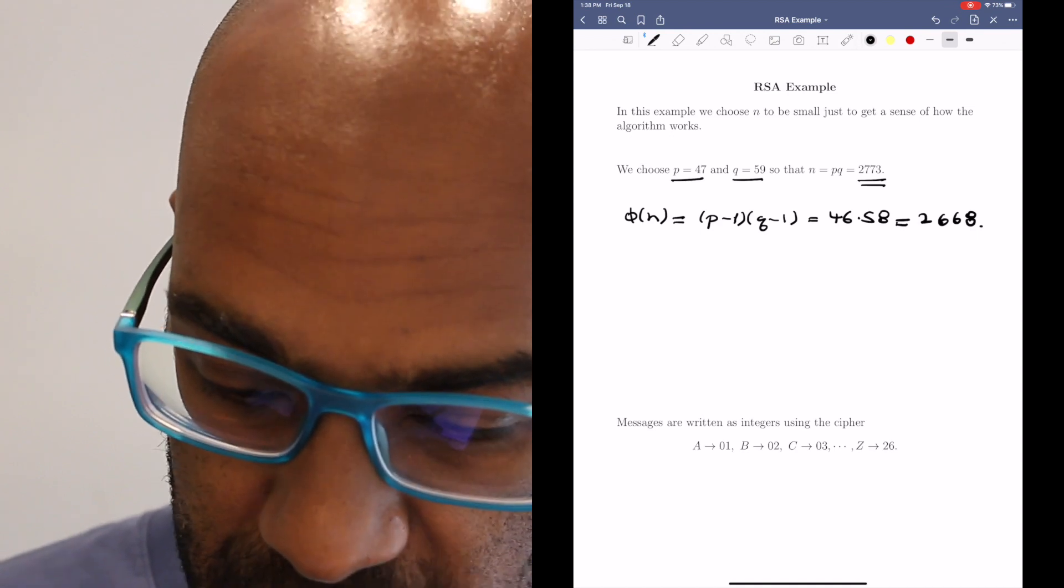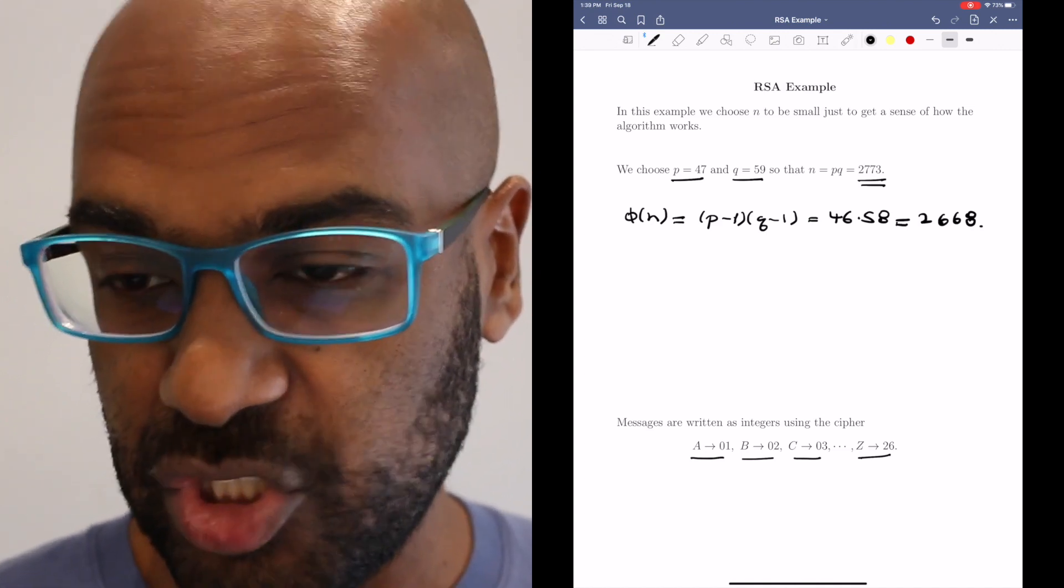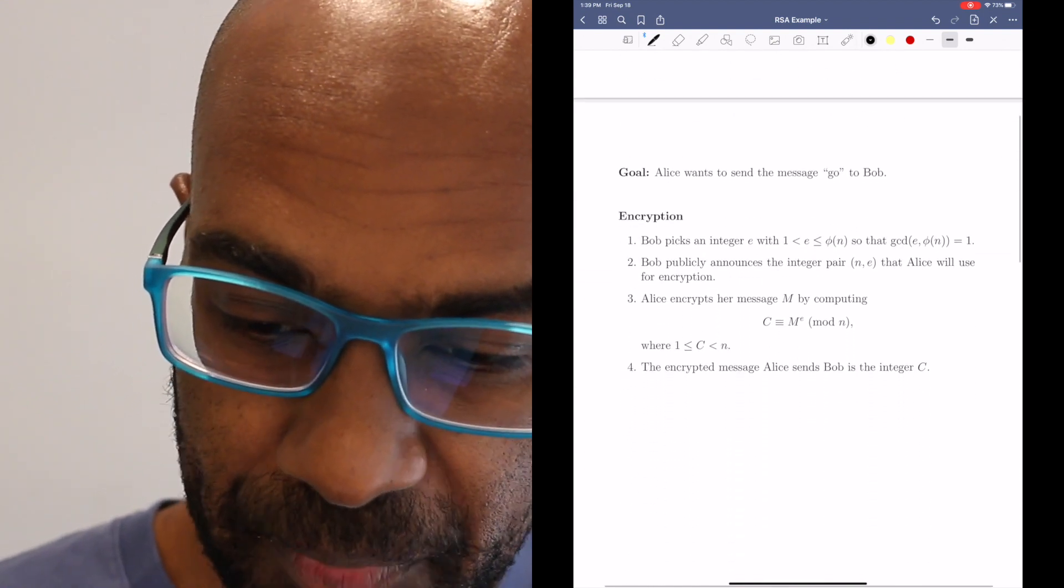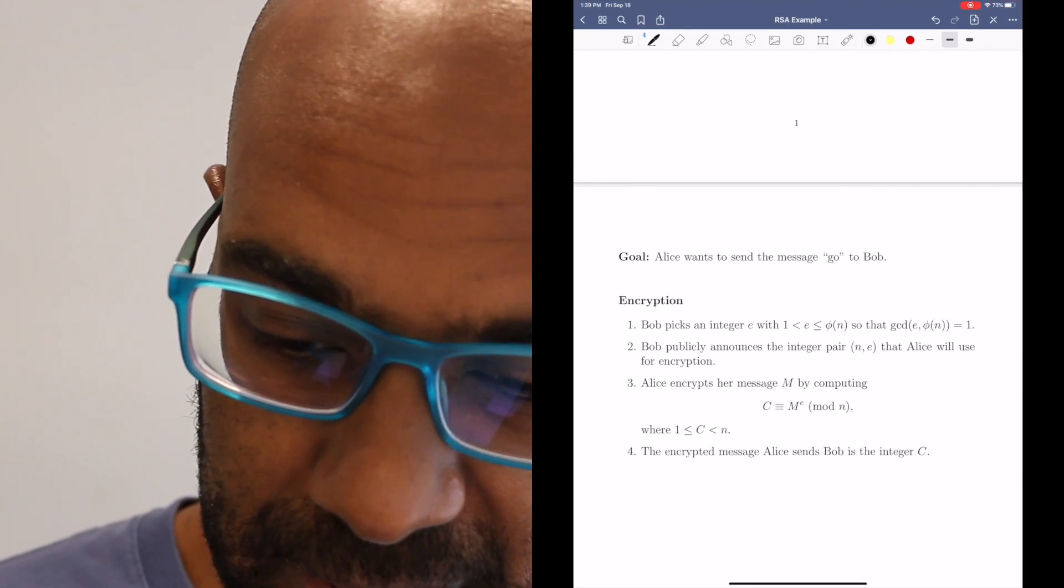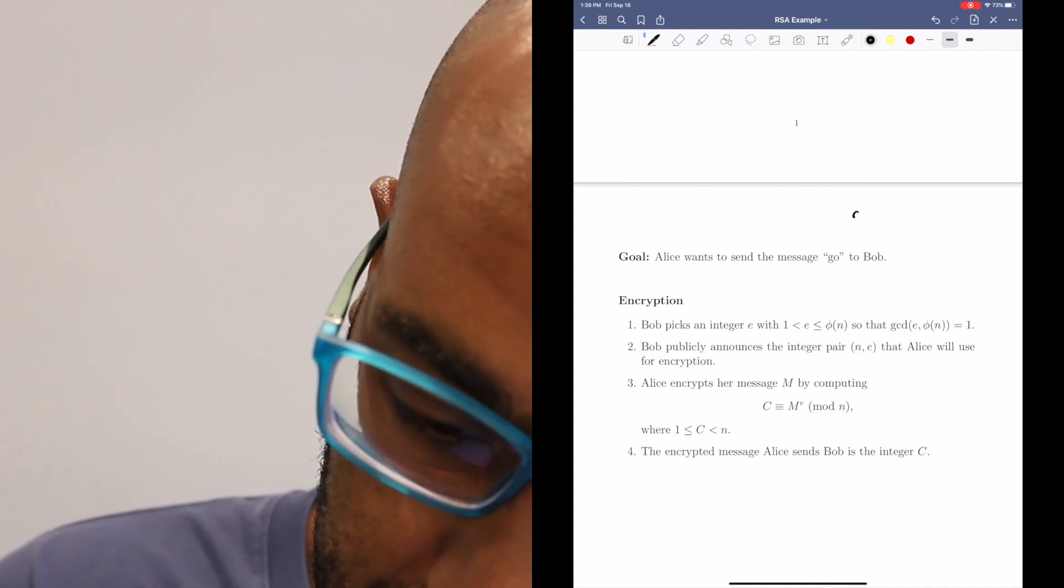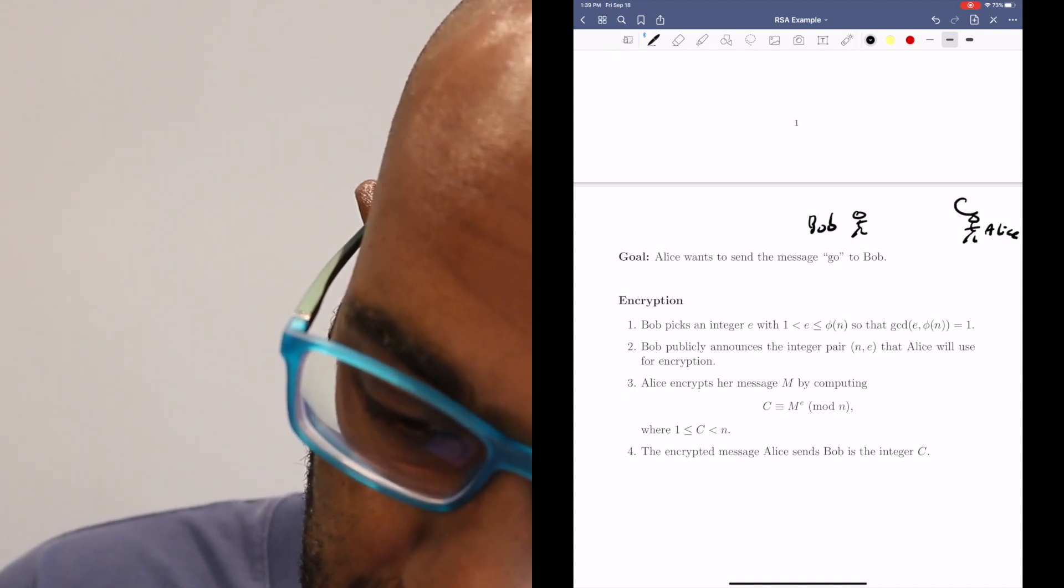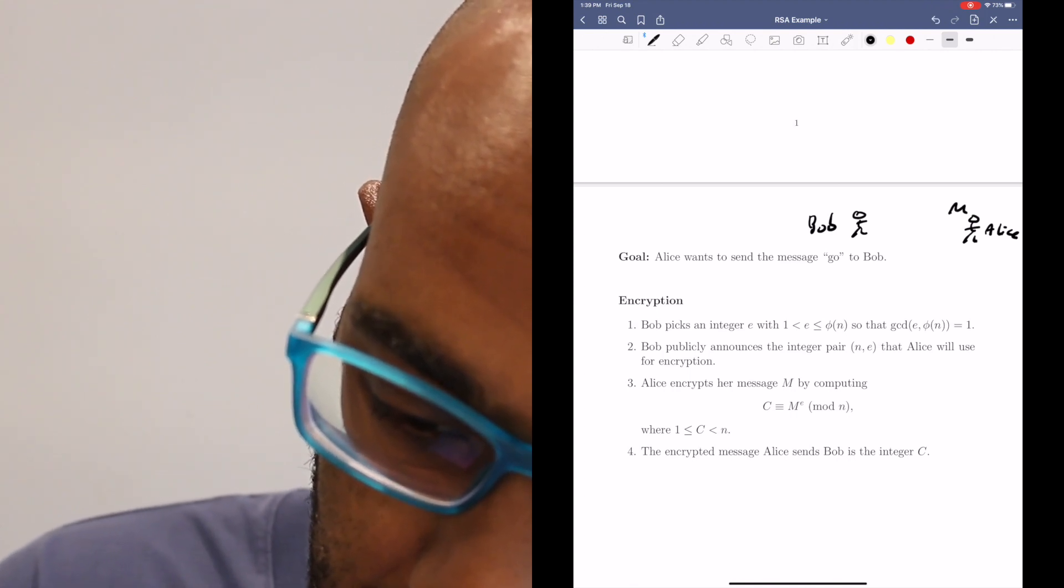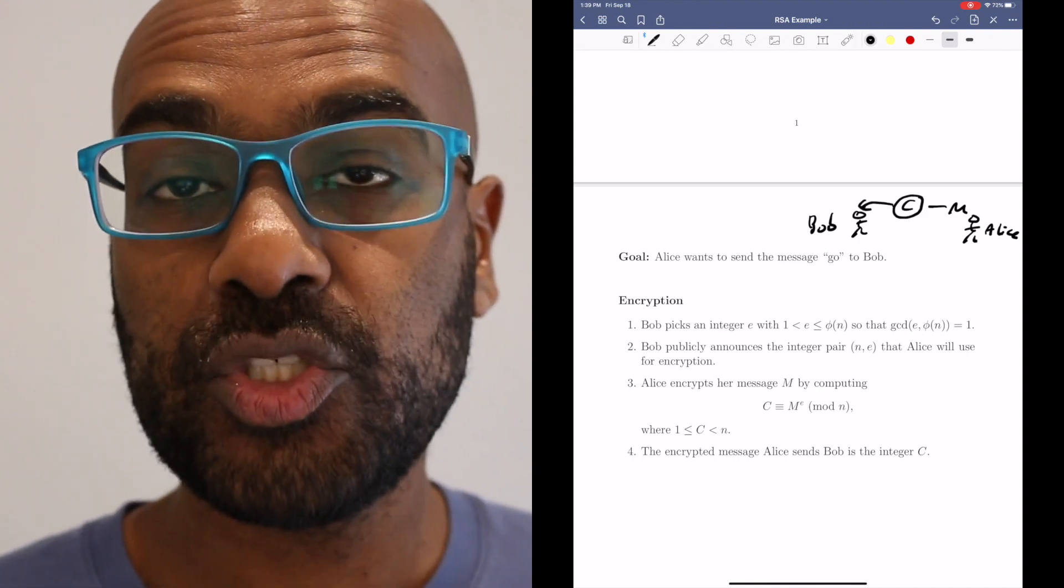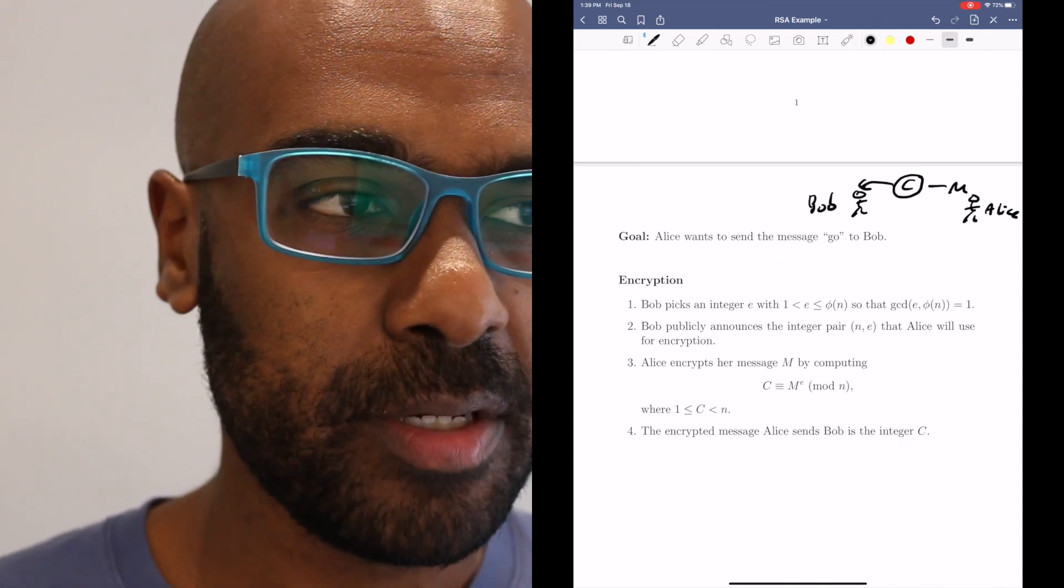And as usual, any message is going to use the cipher where any letter corresponds to its position in the alphabet. Let's jump in and actually try this out. Our goal is for Alice to send a message 'go' to Bob. The first thing we need to do is take this message that Alice has and change it to something secretive that we send over the public channel to Bob. That requires some preprocessing by Bob.